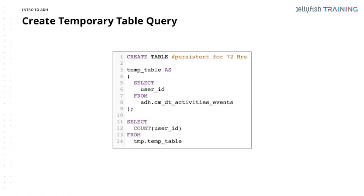One way to do that is a temporary table — persistent for 72 hours, residing only in the ADH or Google BigQuery instance within ADH, not outputted. So you can do manipulation of your data, known as staging. When you write queries one after the other, manipulating the data as you go using a temporary table, that's staging. You can do all your querying, manipulation, and analysis within ADH, which is actually free to query — no cost there.